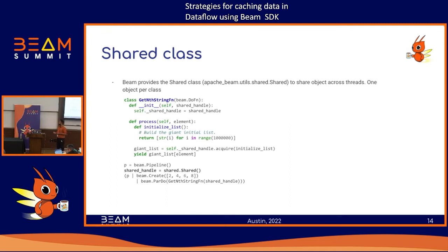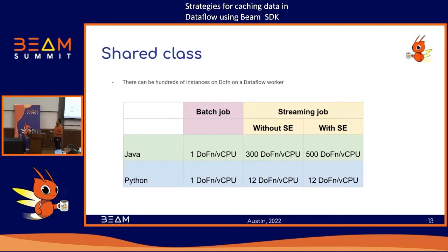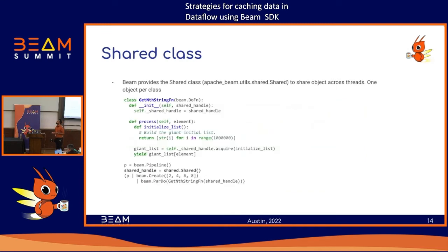Using the shared class library provided by Beam, you pass a shared handler and apply the transform, passing it to the DoFn. For example, building a large list: because you pass a shared handler, the list is shared across all threads in one process. So instead of having 12 copies of an in-memory object for a Python streaming job, you would have just one copy — another way to maintain a local in-memory cache in Dataflow.